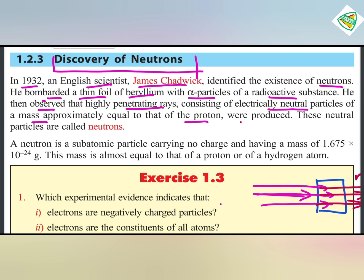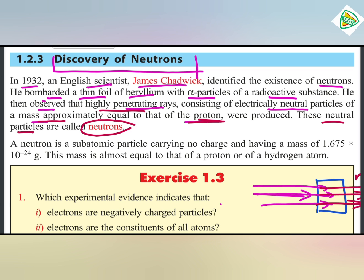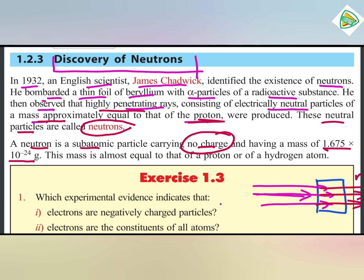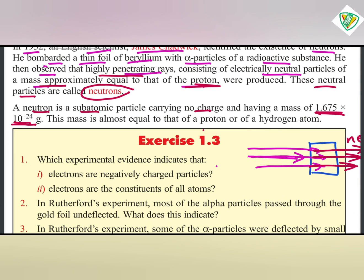The radiation produced is highly penetrating. The neutron is an atomic particle carrying no charge. Its mass is 1.675 times 10 to the power of minus 24 grams.